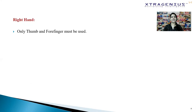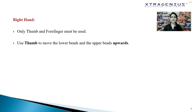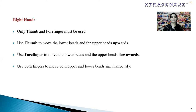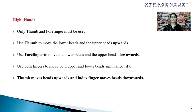When it comes to your right hand, only your thumb and forefinger must be used. Use your thumb to move the lower beads and the upper beads upwards, and your forefinger to move them downwards. Use both fingers to move both upper and lower beads simultaneously. The thumb moves beads upwards and the index finger moves beads downwards.